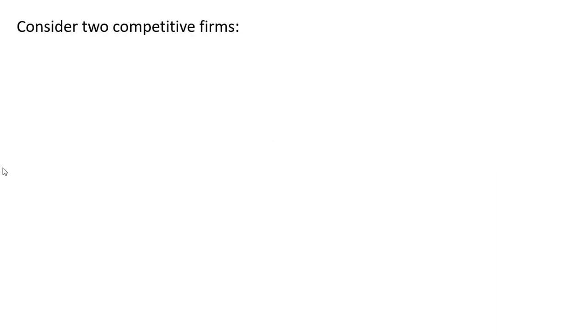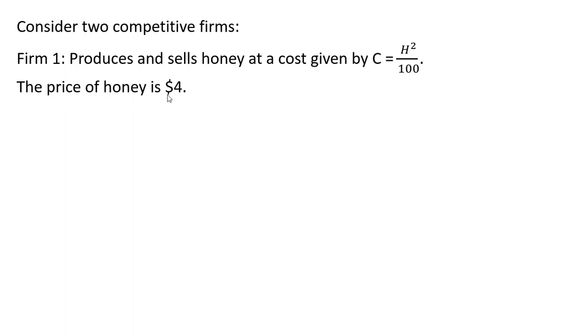Consider two competitive firms. The first firm produces and sells honey at a cost given by C = H²/100, where H adjusts the quantity of honey. The firm sells honey at a price of $4.